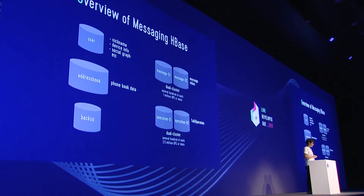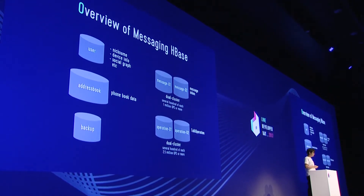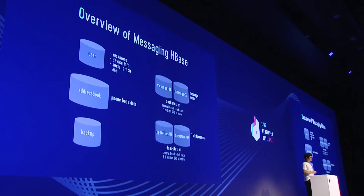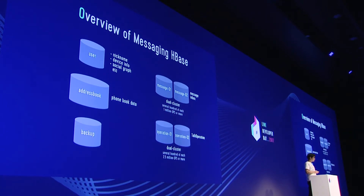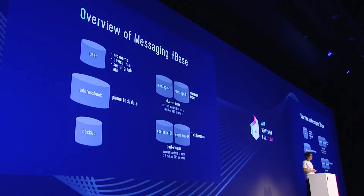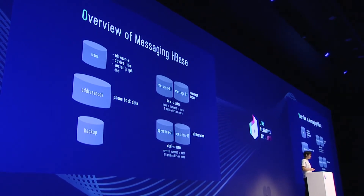So how do we use HBase for messaging purposes? What type of data do we have on HBase? Most of the data of LINE is inside HBase. To be more specific: nickname, display name, device information, social graph, message contents, events — all inside HBase. And talk operations, meaning there are so many events happening online, and it's abstract data that we call operations — that's also inside HBase.